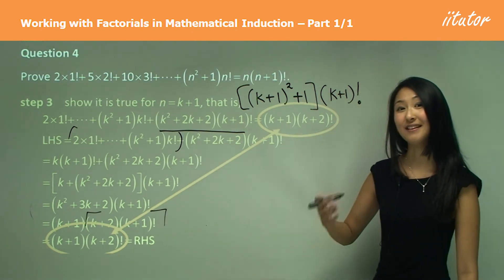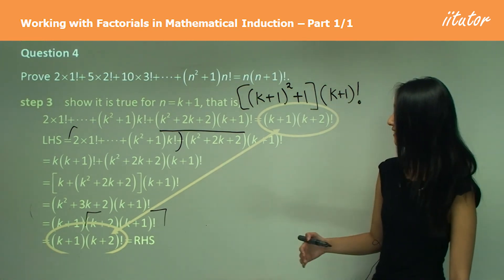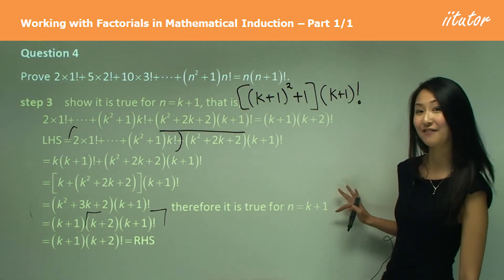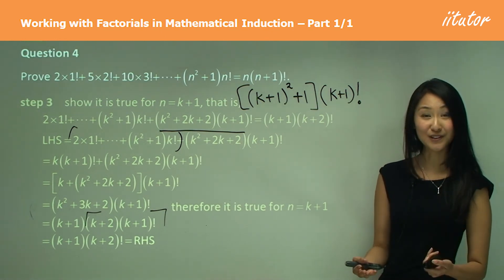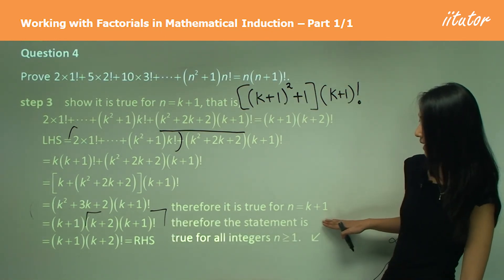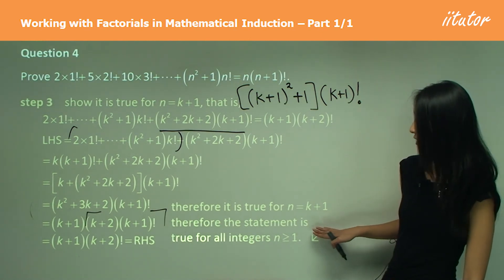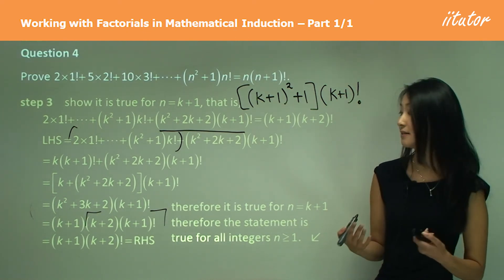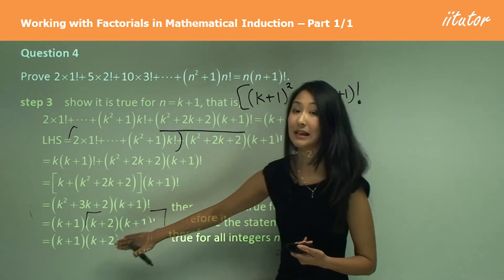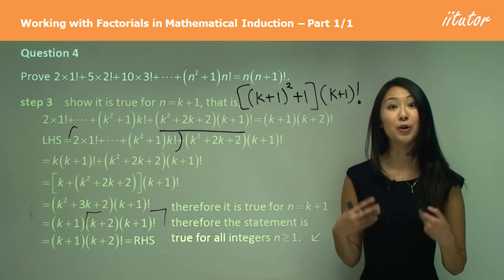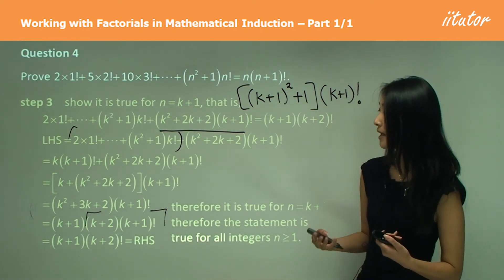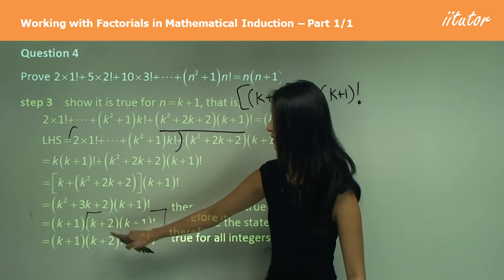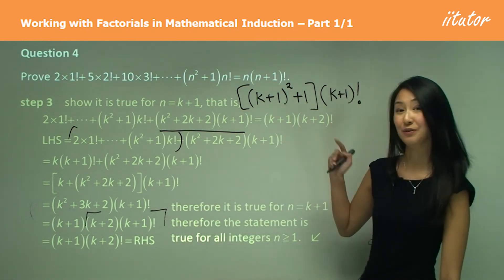Since we've proven the left hand side equals the right hand side, we can say therefore it is true for N equals K+1. Remember to write this, and then write the conclusion: therefore the statement is true for all integers N greater than or equal to 1. The hardest part of this question is recognizing that when something factorial is multiplied by one number greater, it becomes that greater number factorial — that's how you complete the induction proof.